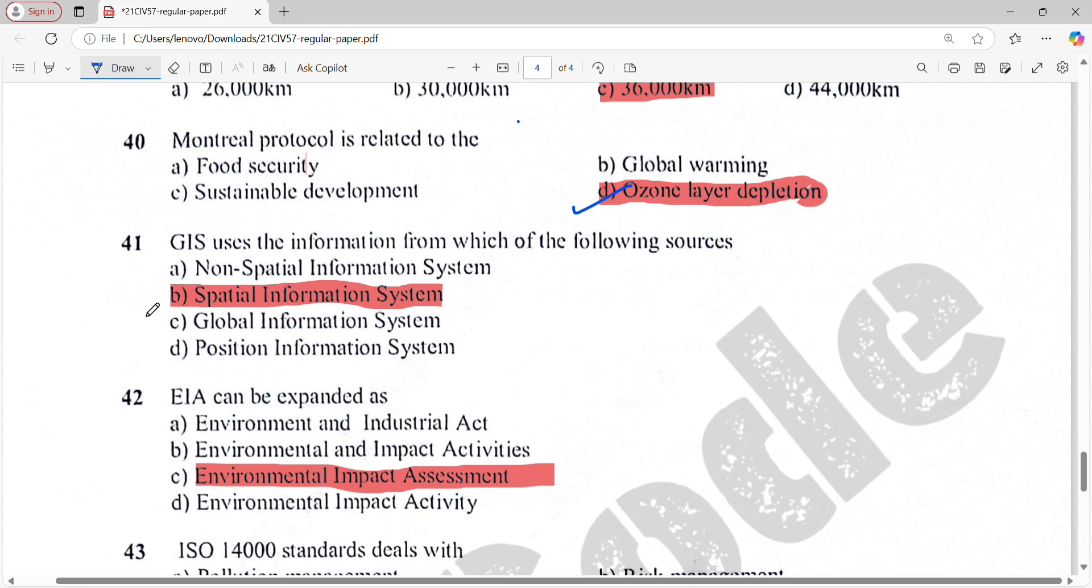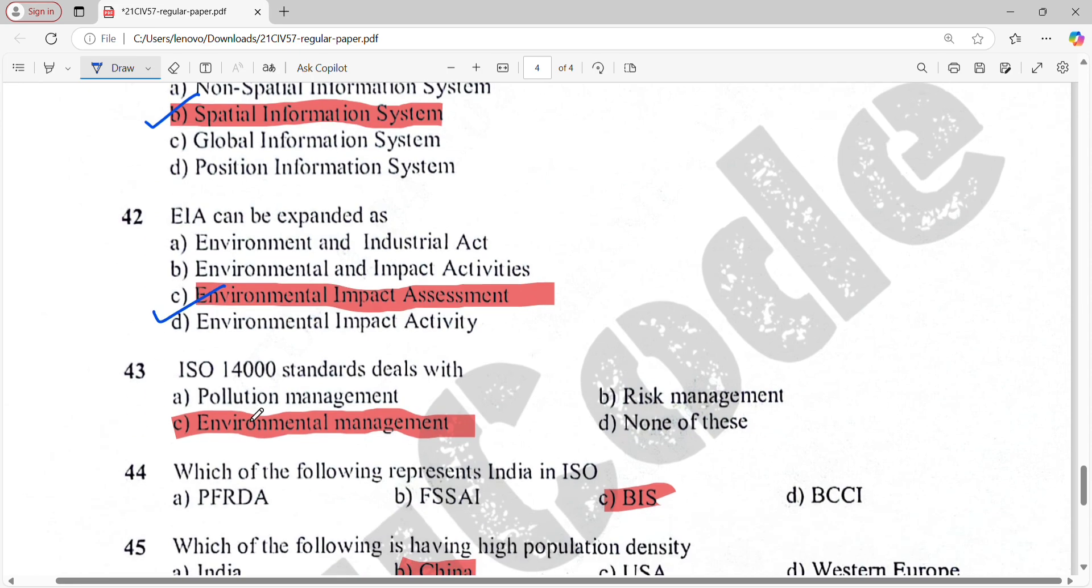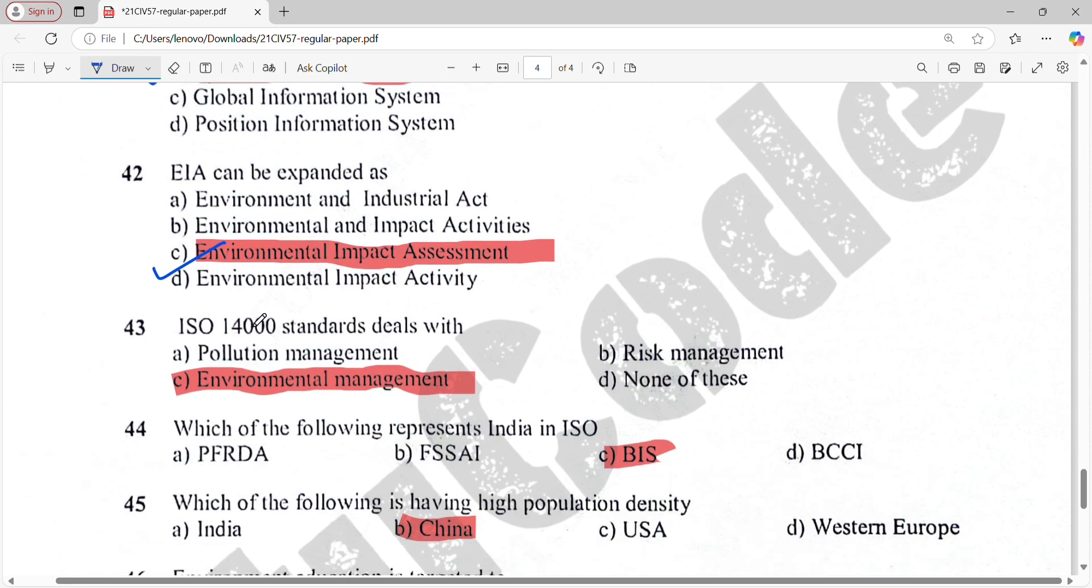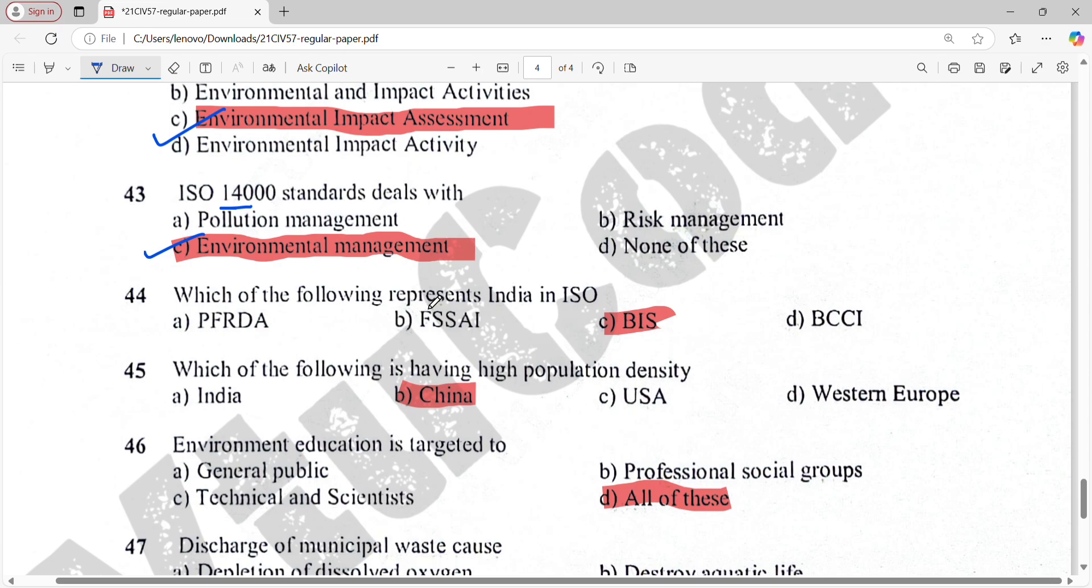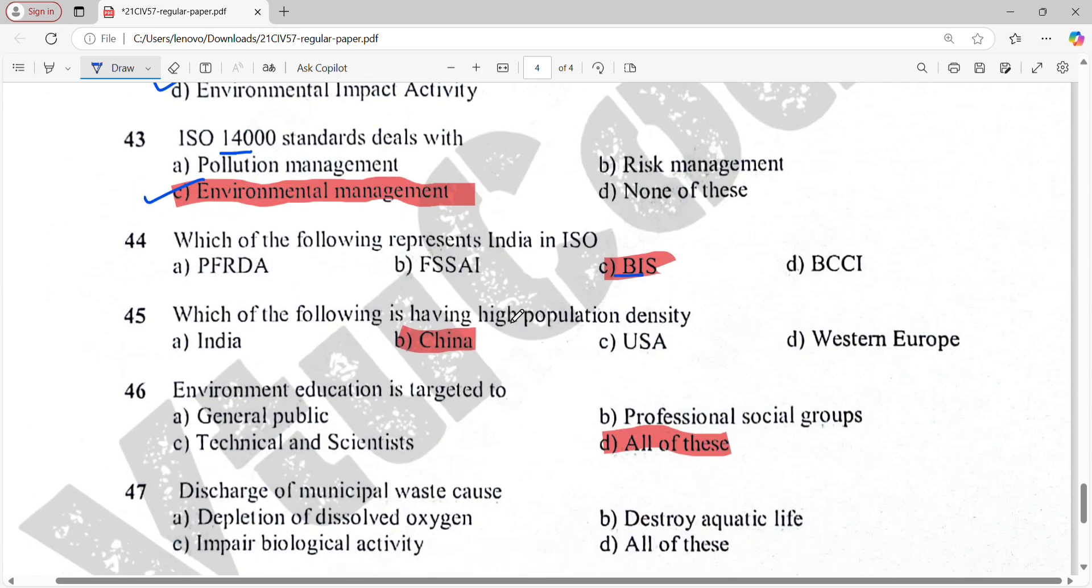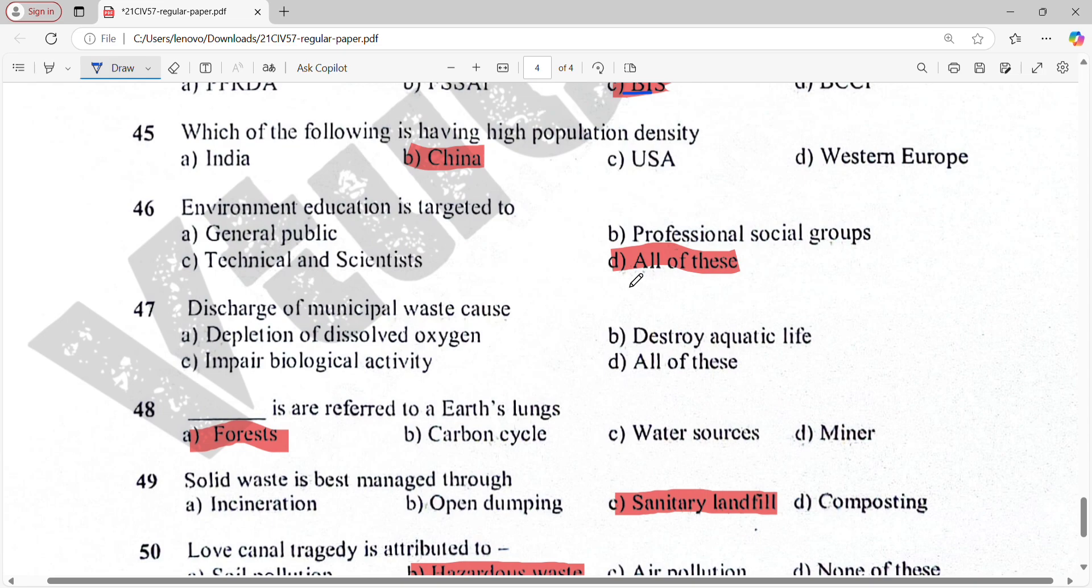EIA can be expanded as Environmental Impact Assessment. ISO 14000 standards deal with environmental management. Which of the following represents India in ISO? BIS. Which of the following is having highest population? That is China.